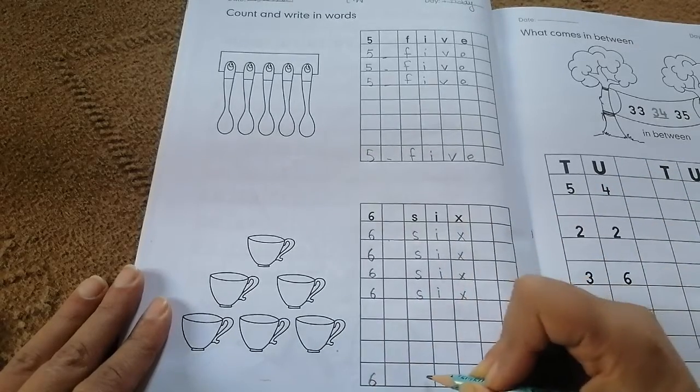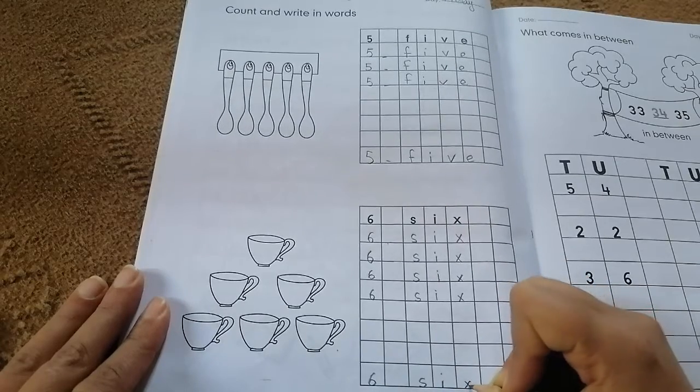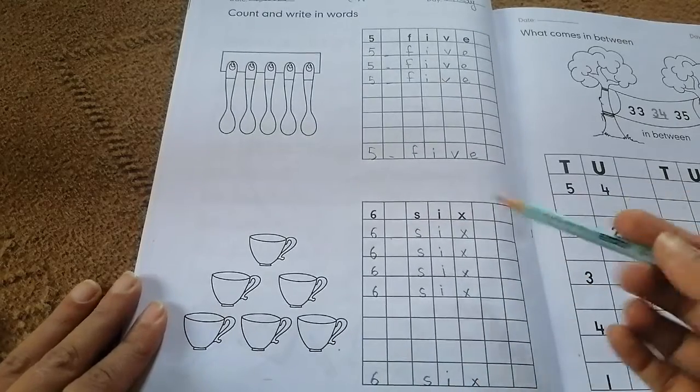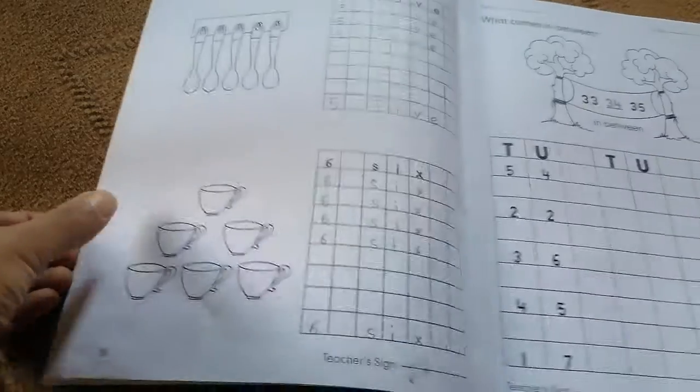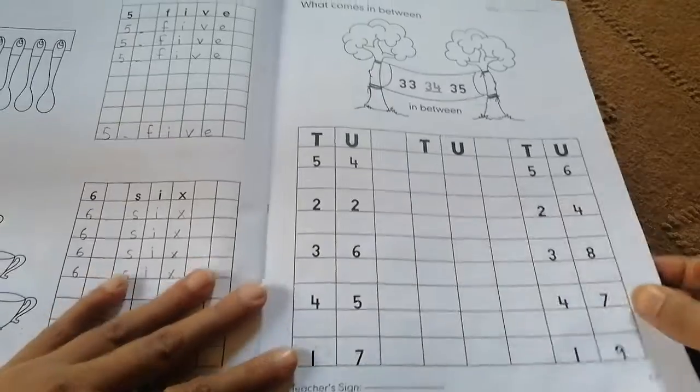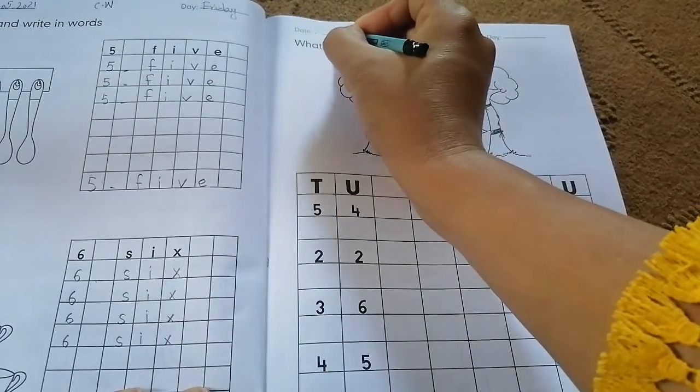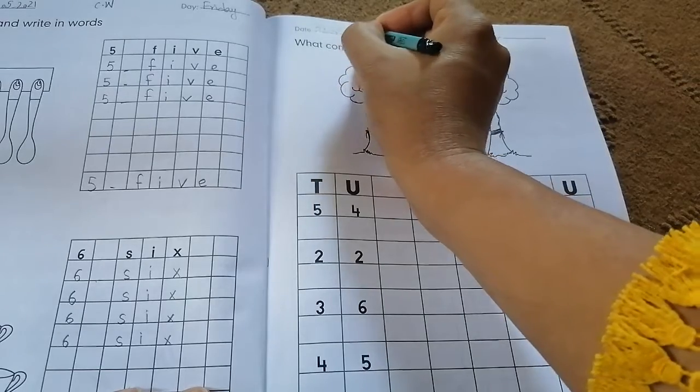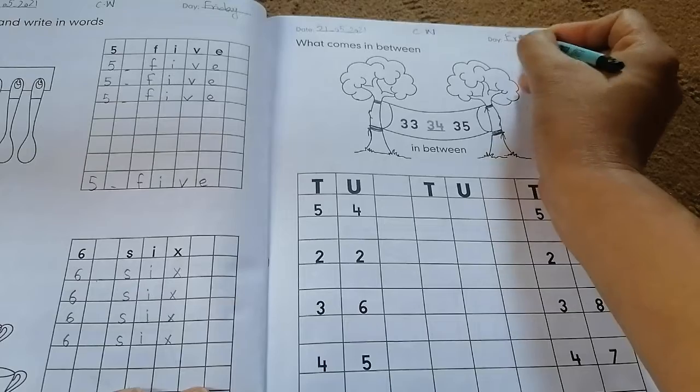Okay, five, six. Now move to the page number 11. Write down the date. Today is 21, month is May, and 2021. Classwork and day is Friday.